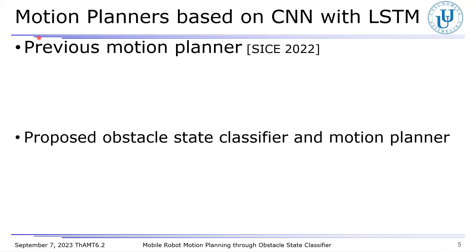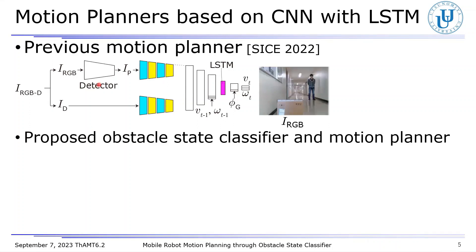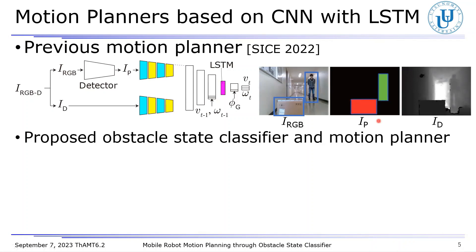Here, let us explain two motion planners. The first one is what we proposed in our previous work. The original RGBD image is first acquired by the camera. From the image, RGB and depth images are derived respectively. The RGB image is fed as the input to an obstacle detector. If one obstacle is detected in the image, the bounding box is displayed. Moreover, the obstacle in the image is recognized as static or dynamic. On the basis of the bounding box and recognition result for the obstacle, a perception image is generated. The perception and depth images are then fed as the inputs to the respective convolution and pooling layers. In these layers, obstacle features important for determining the motion output, Vt and omega t, are extracted from the images.